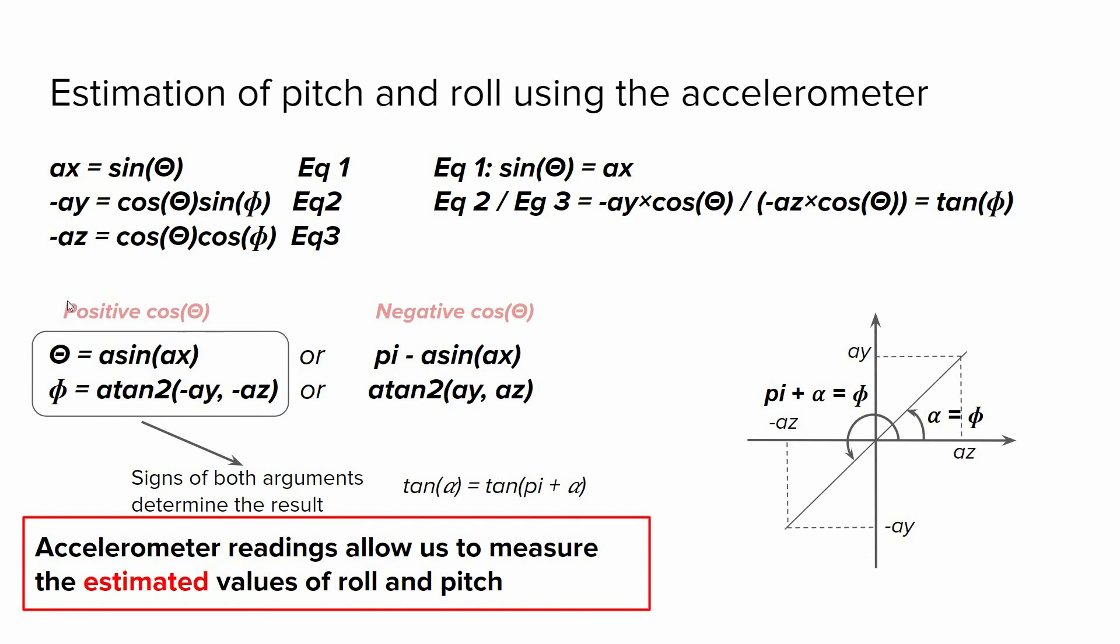In our course, we assume that cosine theta is always positive. So we use these two equations when estimating pitch and roll angles. Finally, we can summarize that accelerometer readings allow us to measure estimated values of roll and pitch.